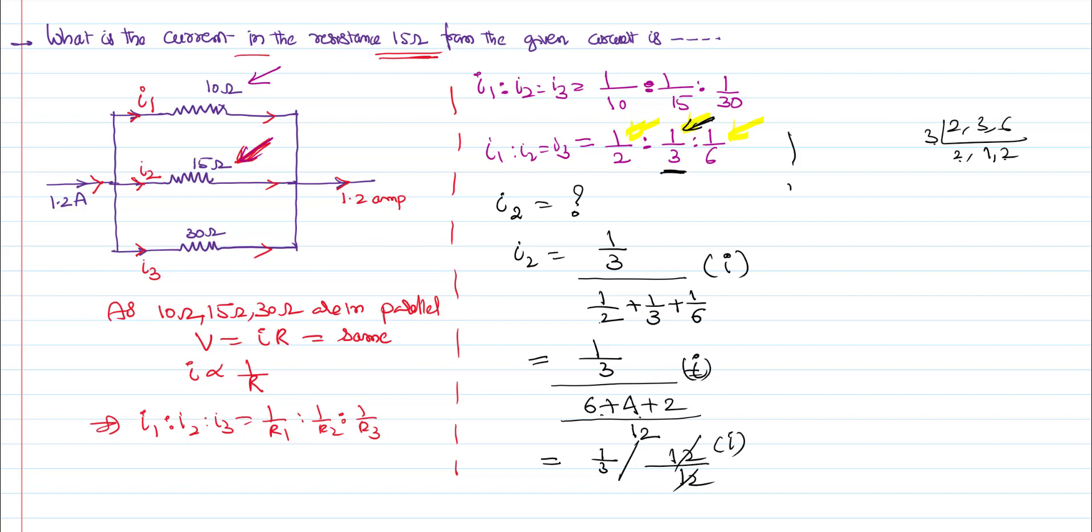So, what's our final answer? So, I2 is equal to 1 by 3. This got cancelled. This is equal to I by 3. It is given that the total I value is 1.2. So, 1 by 3 of 1.2. That's nothing but equal to 0.4 amperes. That's how I can get a value of I2.